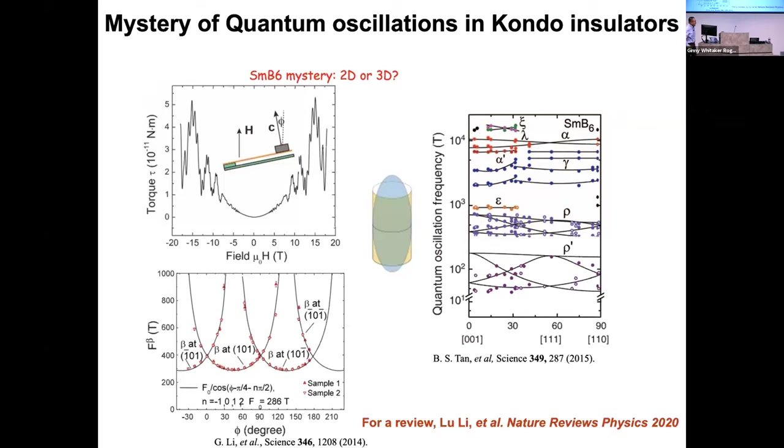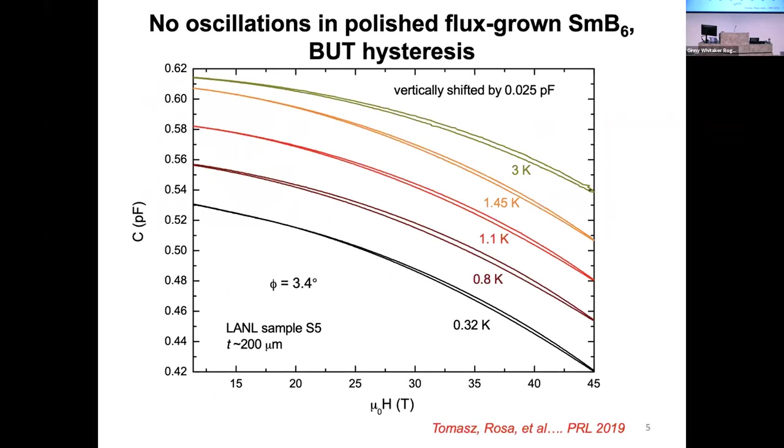This comes as a surprise. Surprised to see why and how we have an insulator showing any oscillation. Within a few years, as Jenny presented, the group led by Professor Rosa from Los Alamos presented data showing polished samples thin enough and quantum oscillation is gone. They shared their samples with us. We measured their sample up to 45 Tesla and confirmed there's no quantum oscillations in their mechanically polished flux-grown samples.